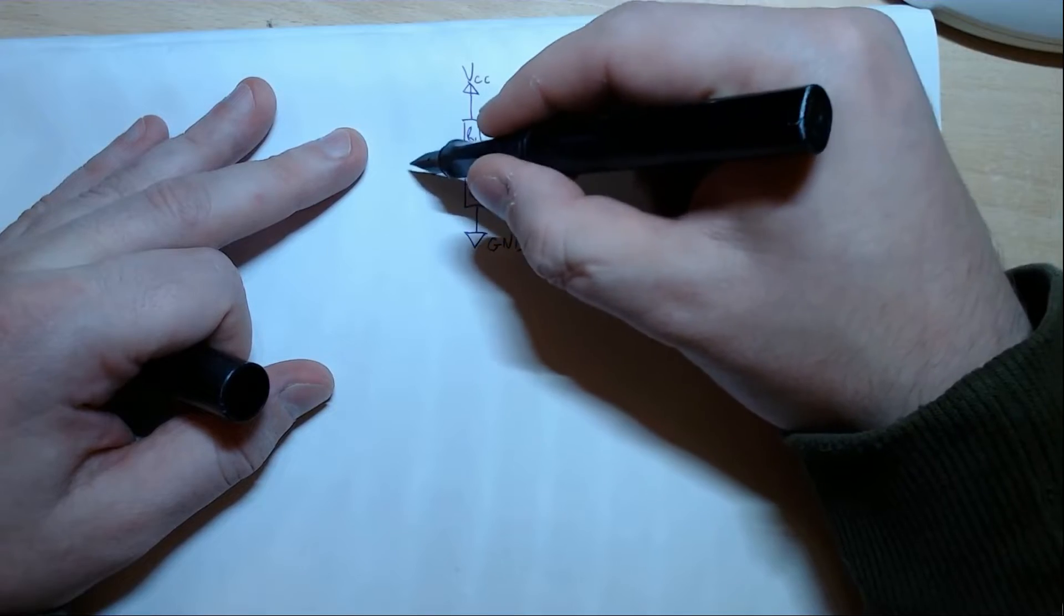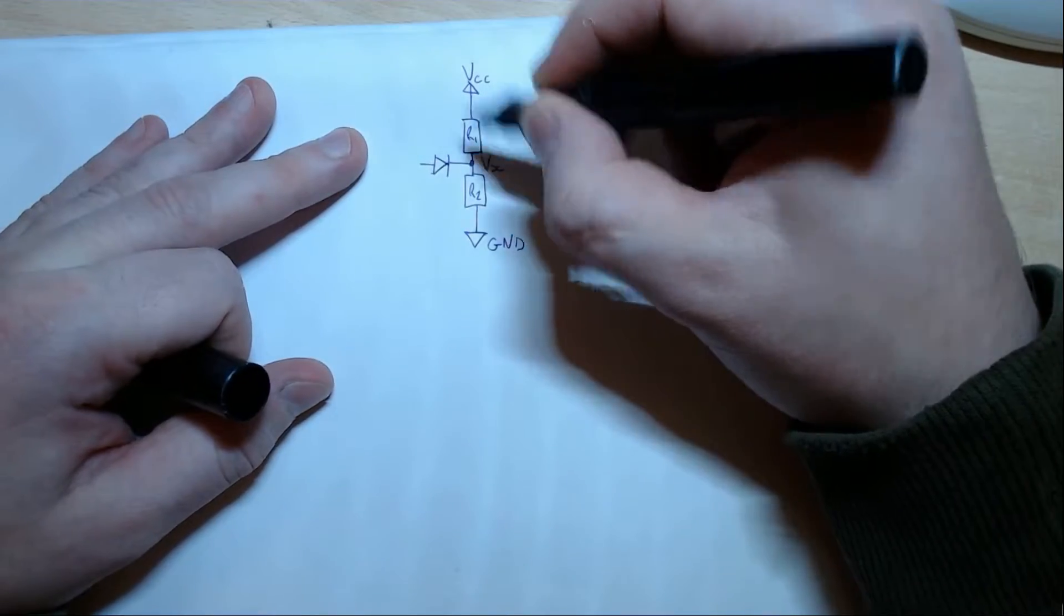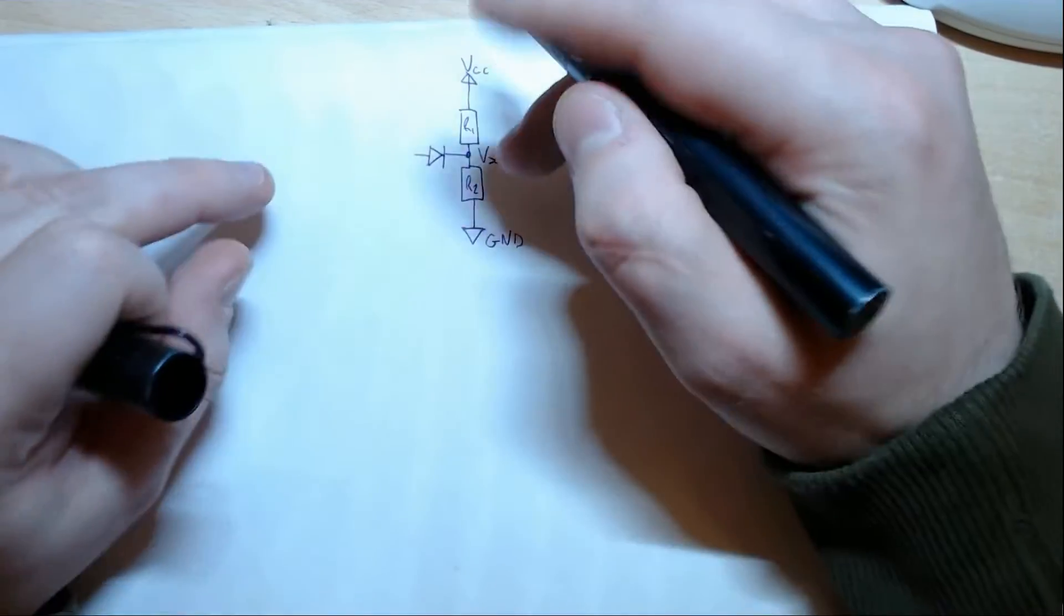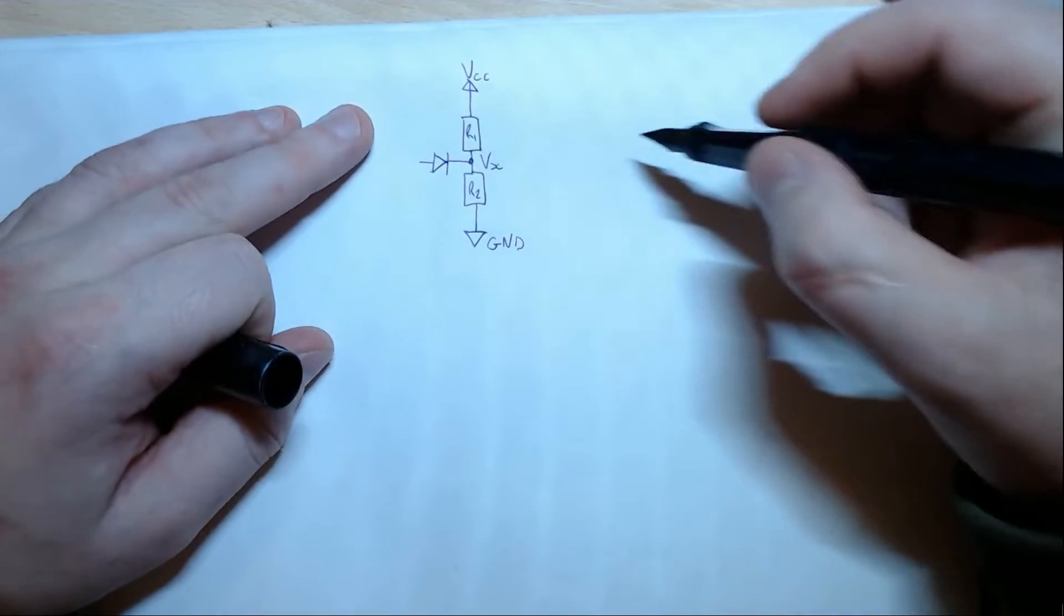So when the voltage on this side of the diode is higher than this side of the diode, this is a very simple diode model.